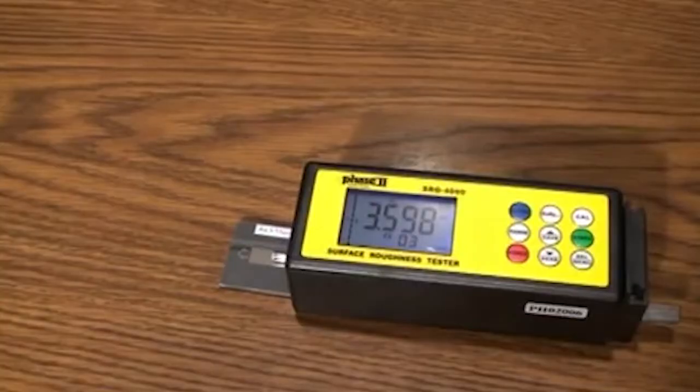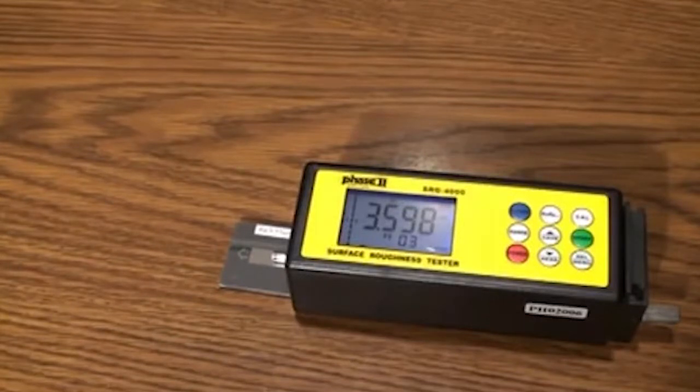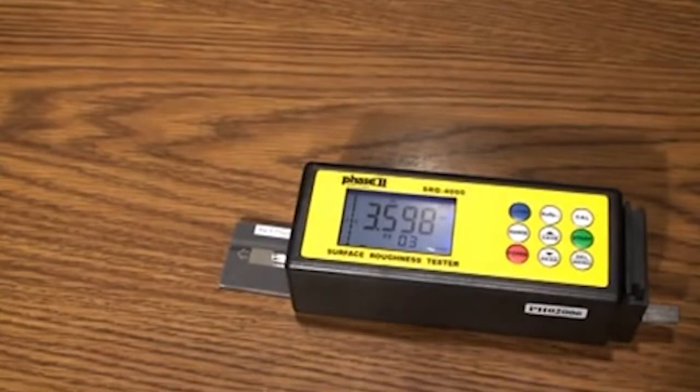This is an instructional video detailing the applications and functions of the Phase 2 SRG-4000 surface roughness tester. The SRG-4000 is an instrument designed to check surface finish with measured values displayed on a digital readout in various surface roughness parameters. Note the SRG-4000 is an extremely sensitive instrument and should be treated with care to assure measurement accuracy and reliable performance.